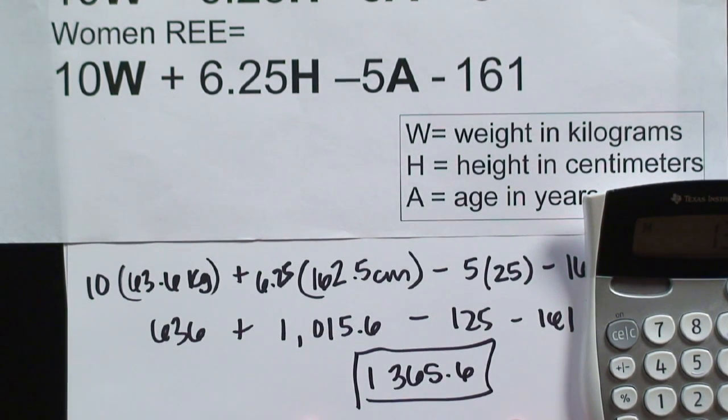Now again, this number is my resting energy expenditure, meaning if I were bedridden or not incorporating any other exercise or daily movement, my body would require almost 1400 calories to maintain my current weight.